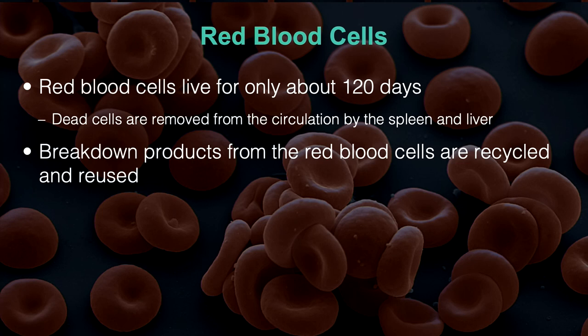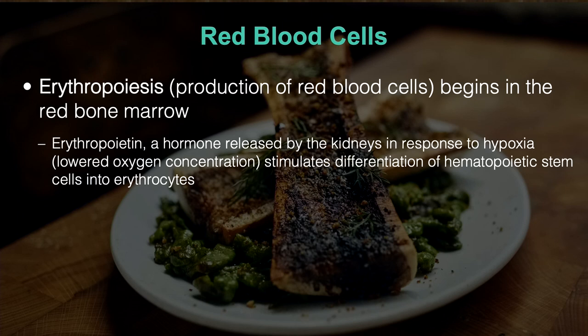Red blood cells are produced in the marrow of the bones — the red bone marrow. The process by which we make new red blood cells is really interesting. It's the mechanism athletes try to leverage to improve sports performance — if you have more red blood cells and carry more oxygen, you can work out at a higher intensity. This is the basis of blood doping or EPO administration. EPO — erythropoietin — is the hormone that initiates the production of red blood cells. Some individuals will artificially administer EPO to produce more red blood cells than they would naturally.